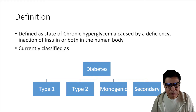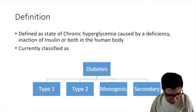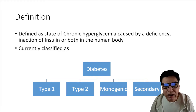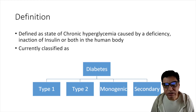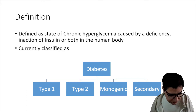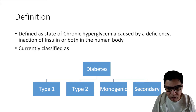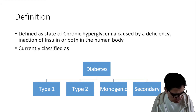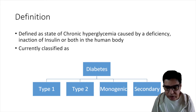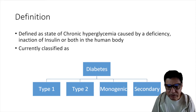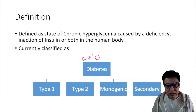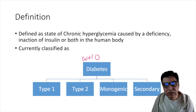Now in the past diabetes has been classified in many different ways. The most recent classification comes from the World Health Organization. WHO in 2019 defined diabetes into the following types: Type 1 diabetes, Type 2 diabetes, monogenic diabetes, and secondary diabetes.